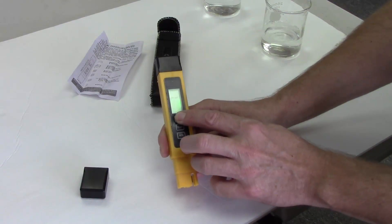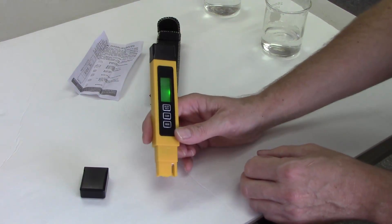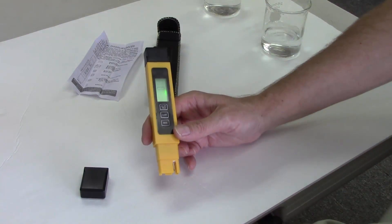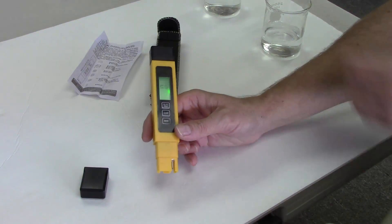When you press the on/off button, it's going to light up and clear out. It's going to say zero PPM, which is for total dissolved solids.